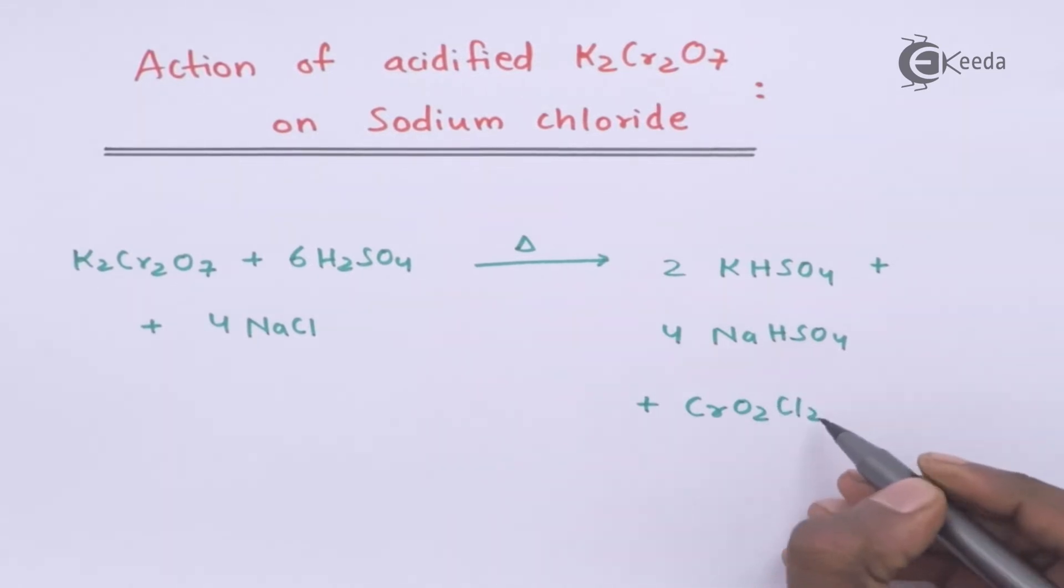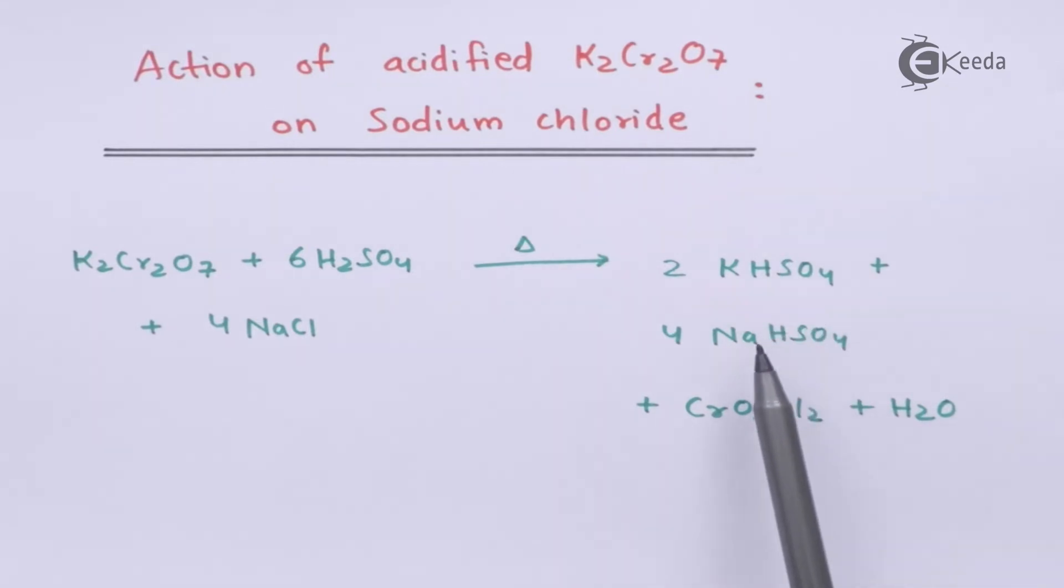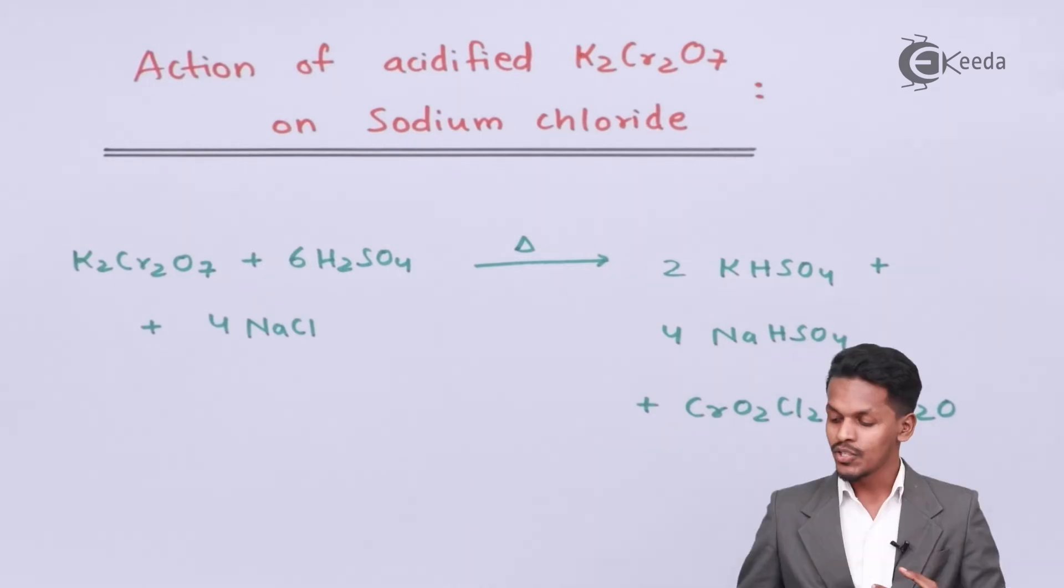CrO2Cl2, that is known as chromyl chloride, along with H2O. So these are the soluble products that we could get, but this CrO2Cl2, that is chromyl chloride, is what we could obtain in the form of red vapors.